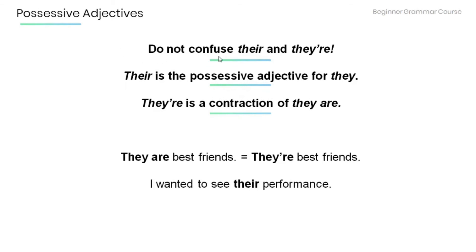Also remember not to confuse 'their' and 'they're.' 'They're' is a contraction of 'they are,' so 'They are best friends' is the same as 'They're best friends.' But in 'I want to see their performance,' 'their' is the possessive adjective for 'they' and modifies the noun 'performance.'